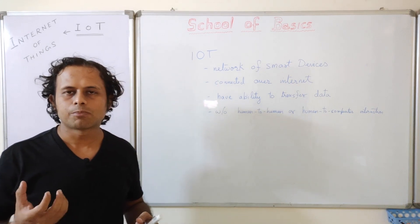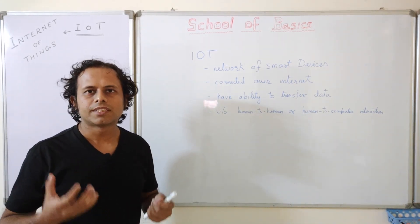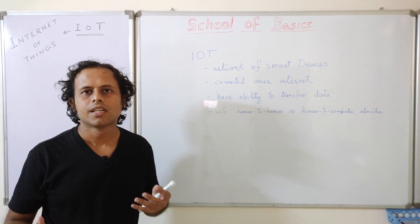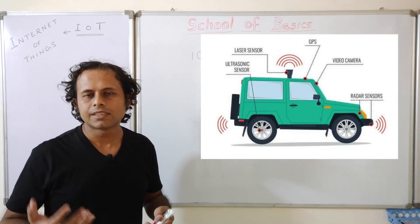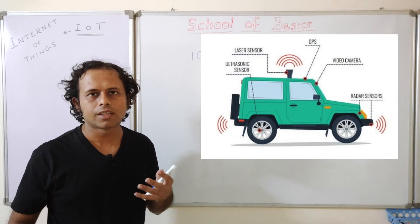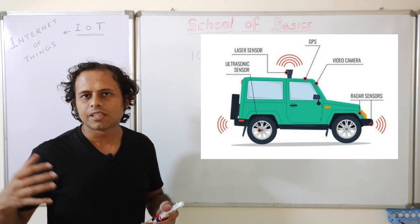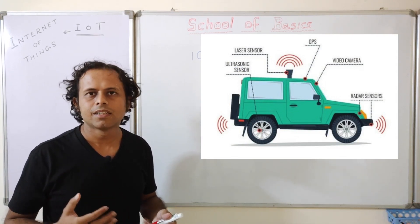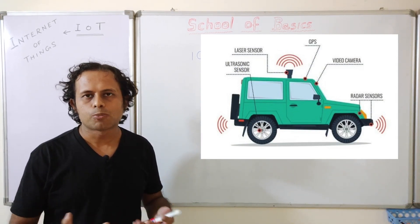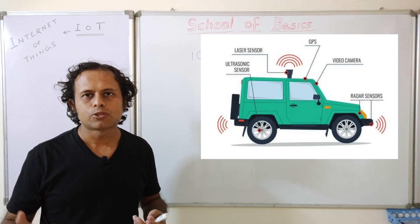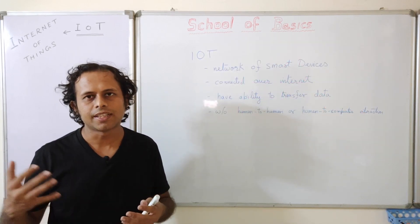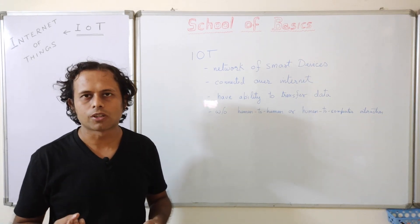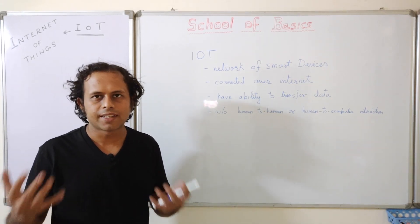Take a simple example: suppose there is a vehicle equipped with IoT. It has sensors that monitor its health and well-being. But thinking a step ahead — if there is an accident, this IoT-equipped vehicle can actually send information about the accident to the nearest police station or ambulance, along with the exact location of the spot.